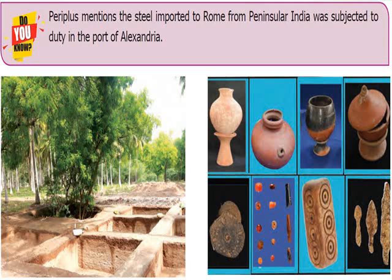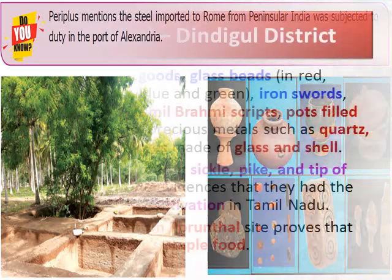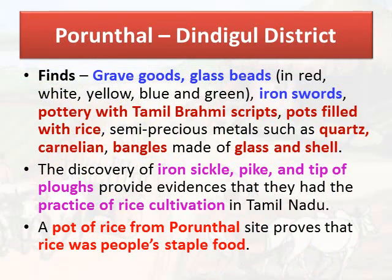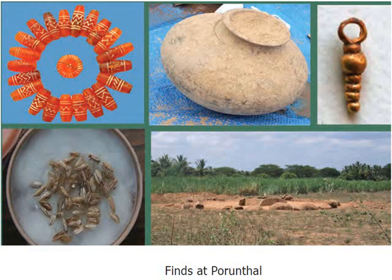In Porundal, Dindigal district, finds include grave goods, glass beads in red, white, yellow, blue, and green, iron swords, pottery with Tamil Brahmi scripts, pots filled with rice, semi-precious stones such as quartz and carnelian, and bangles of glass and shell. The discovery of iron sickle, pike, and tip of plough provides evidence for rice cultivation in Tamil Nadu. A pot of rice from the Porundal site proves that rice was the people's staple food.